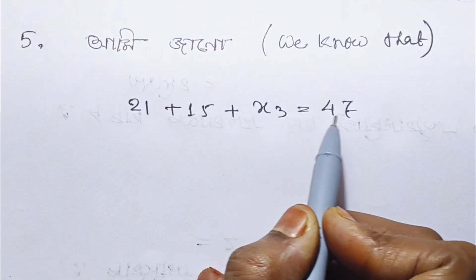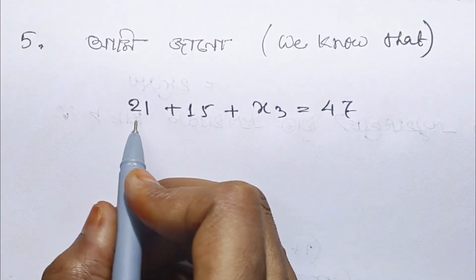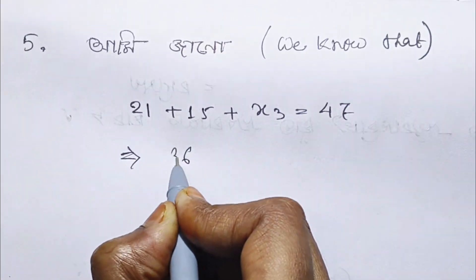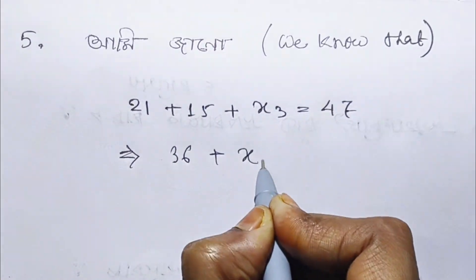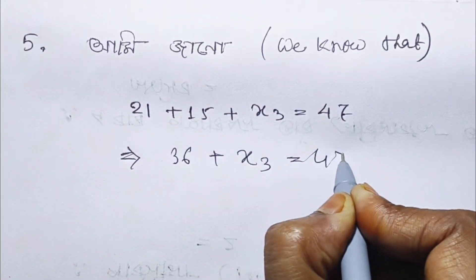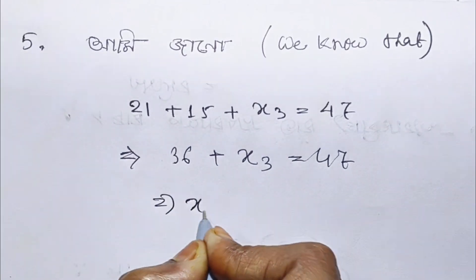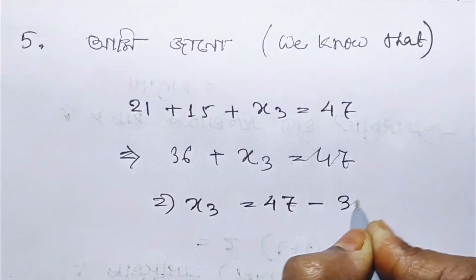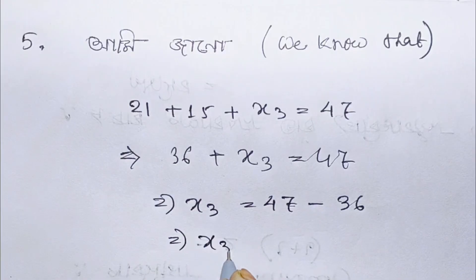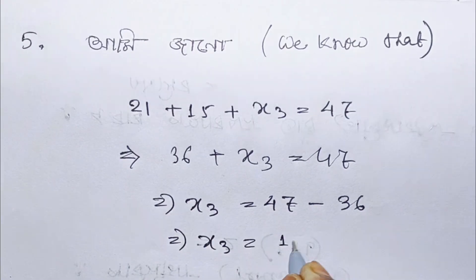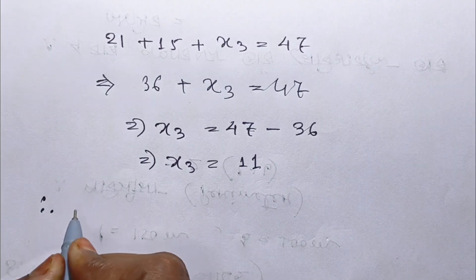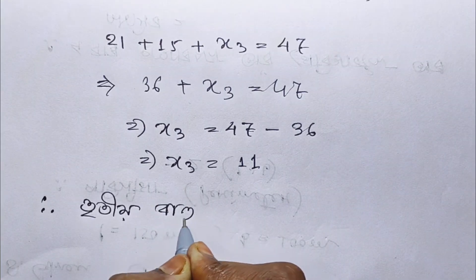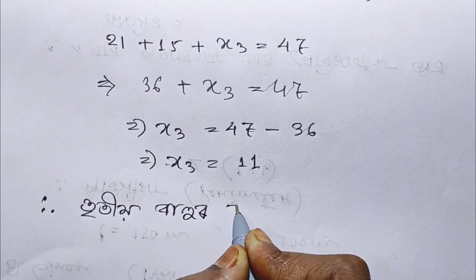We know the perimeter is 47cm. We will find the third side: perimeter = sum of all sides, so third side = 47cm minus (21cm + 15cm) = 47cm minus 36cm = 11cm.